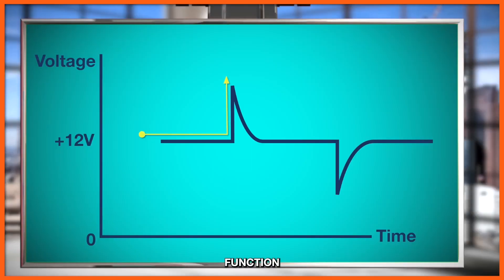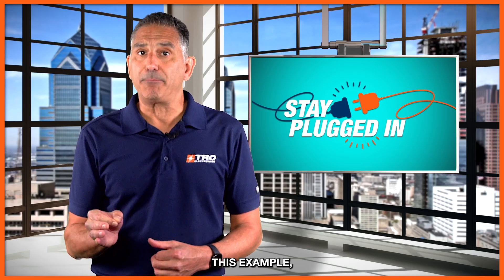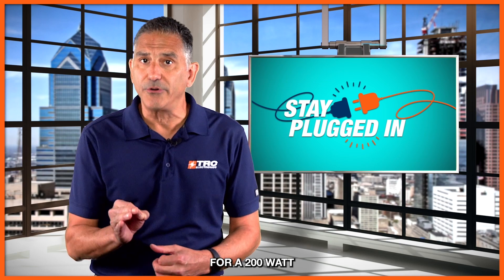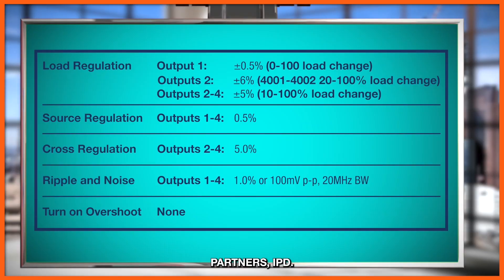The cross-regulation function defines the percentage change in output voltage after the output stabilizes, and does not account for any overshoot or undershoot experienced during conditions such as a sudden shift in the load. In this example, here is a specification for a 200-watt, four-output power supply from one of our manufacturing partners, IPD.